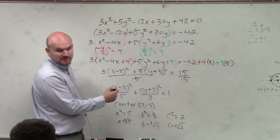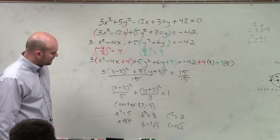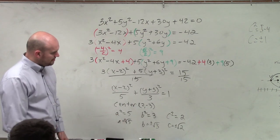And c² is going to be the difference of a² - b², which is going to equal 2. So c equals plus or minus the square root of 2.